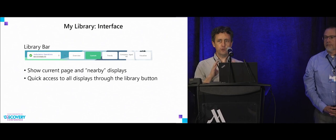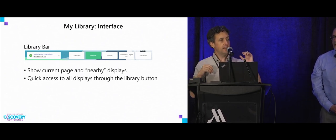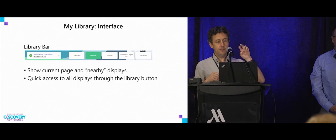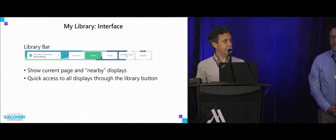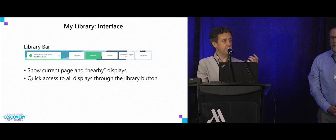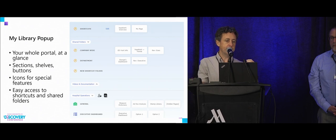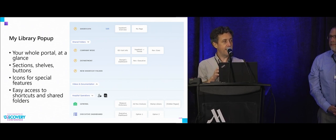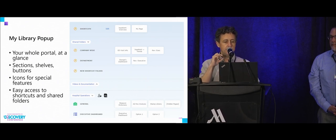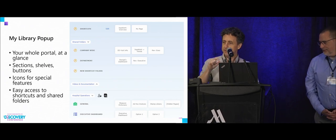So let's do the quick recap. In My Library, which is when you opt into it, it displays a bar across the top — the library bar — and that shows you the current page, nearby pages, and allows you to change pages much more quickly than previous interfaces. When you click the big button, you get your entire site in different sections that you can collapse. The sections have icons for special pages or features of your site, and within a section, we have shelves and buttons.